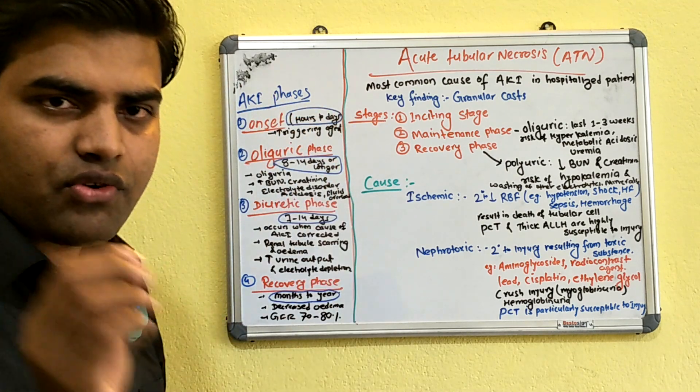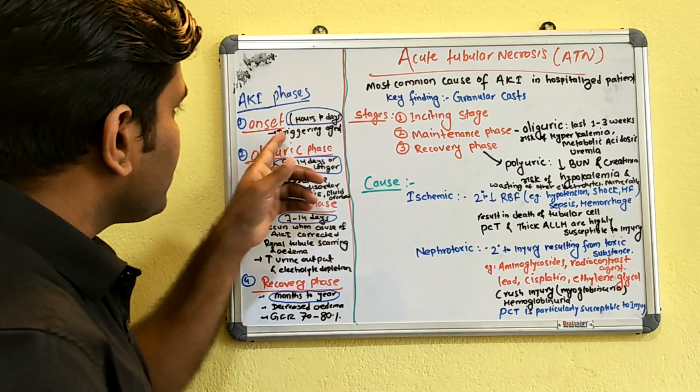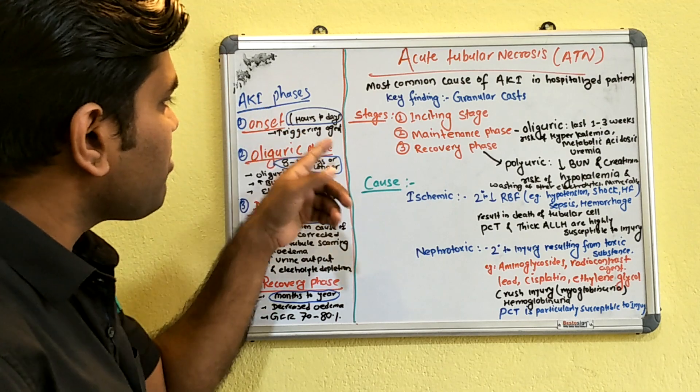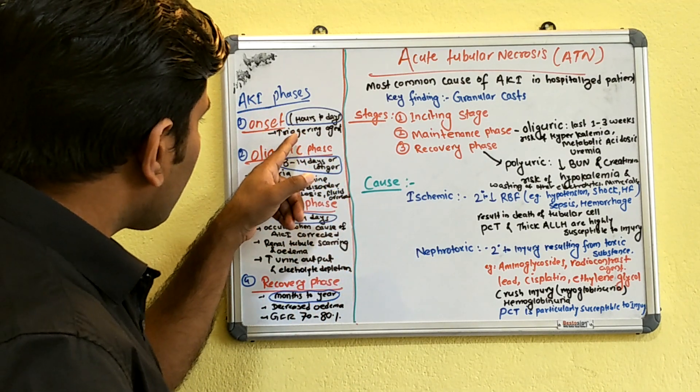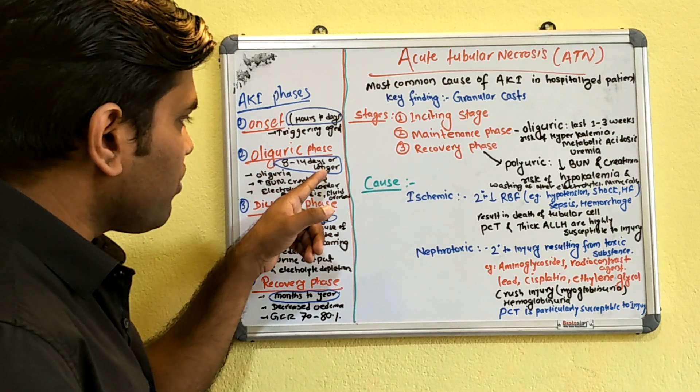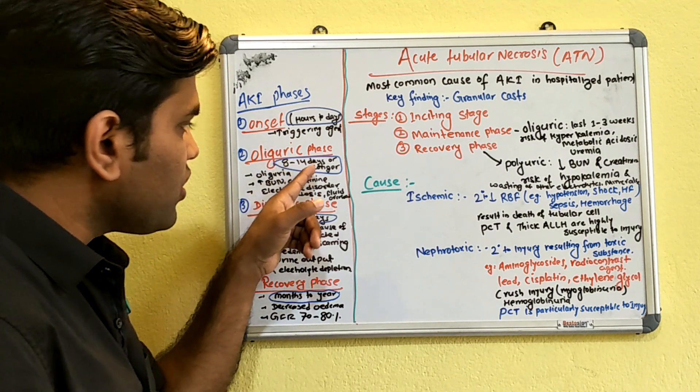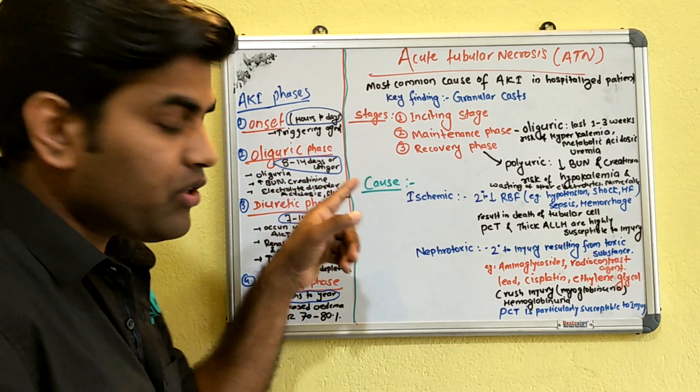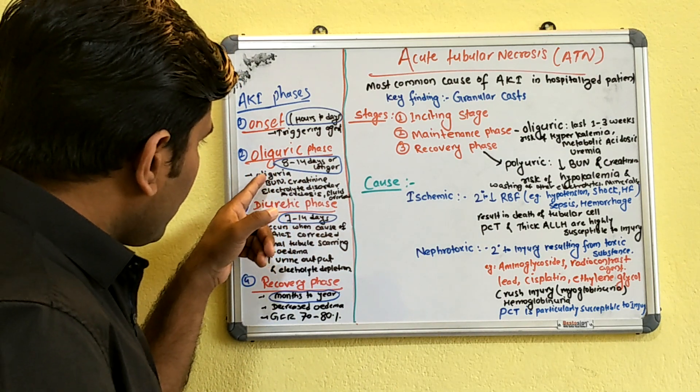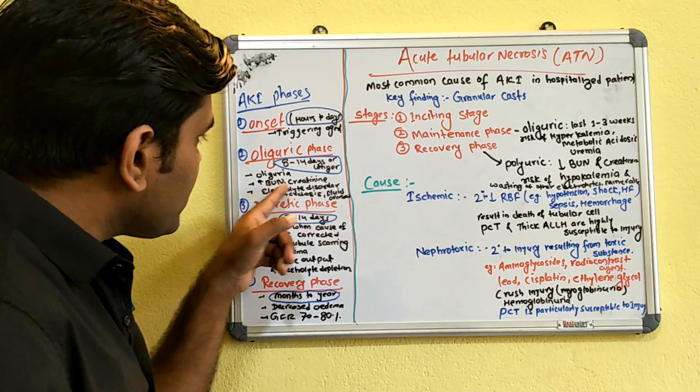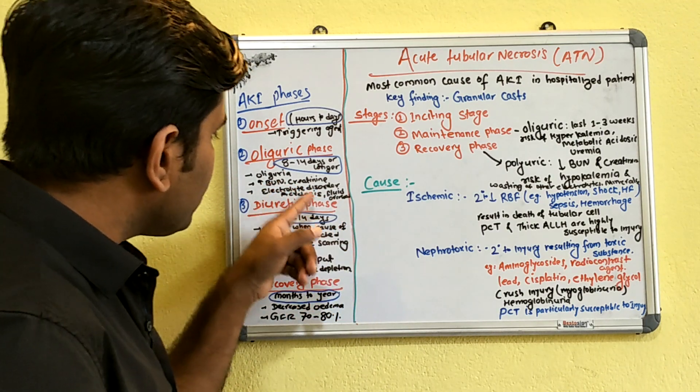If you correlate here, the onset phase lasts from four hours to two days. The initiating event will be present, whether it's a drug or ischemia that causes damage.